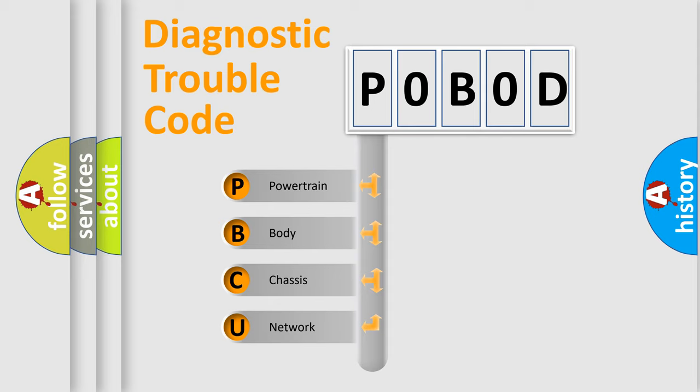We divide the electric system of automobile into four basic units: Powertrain, body, chassis, and network.